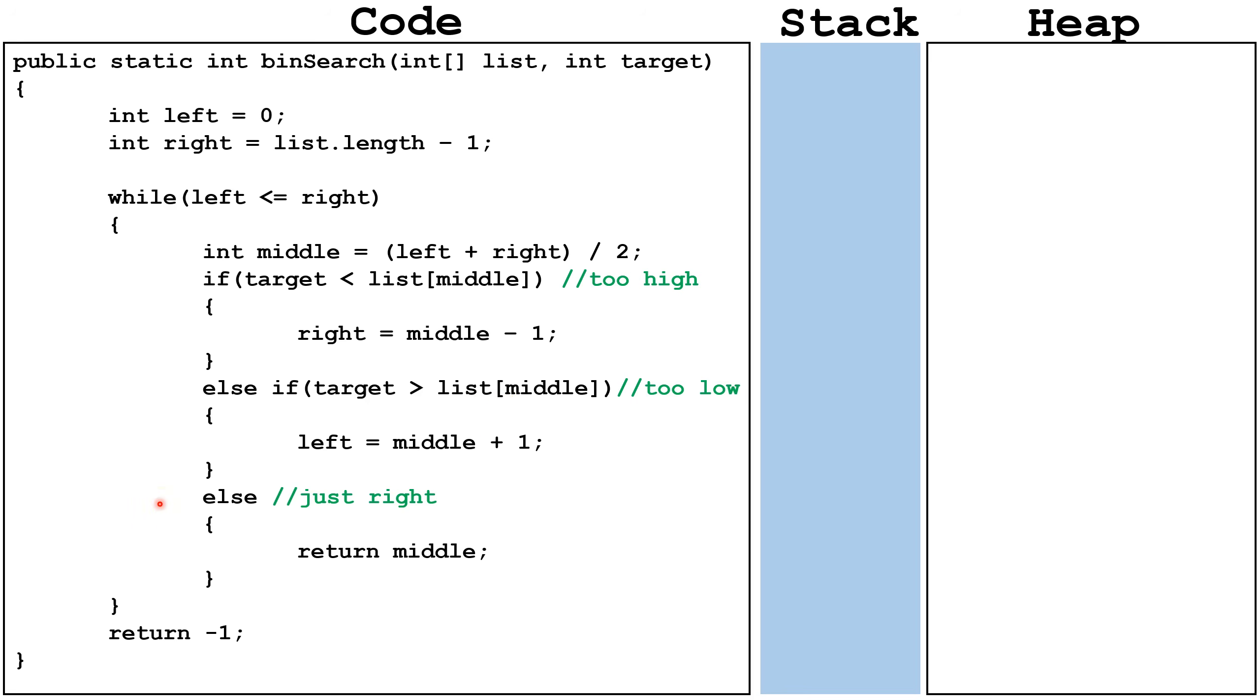And this else is if we found the exact match of the target. The else block of code returns the index where our target is located. If we go through this while loop and check out the entire list and don't find our target, we return negative 1. That signals that the target value is not located in our array.